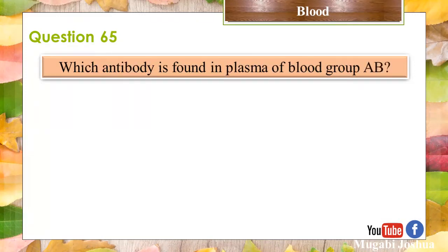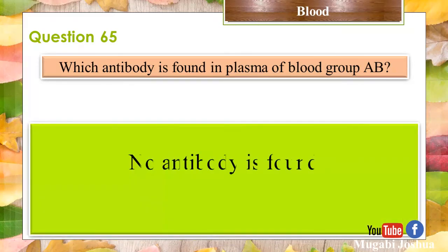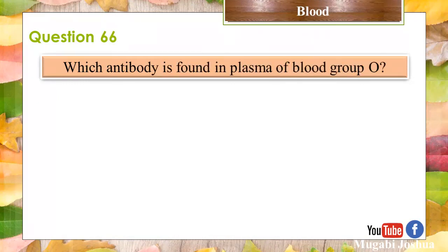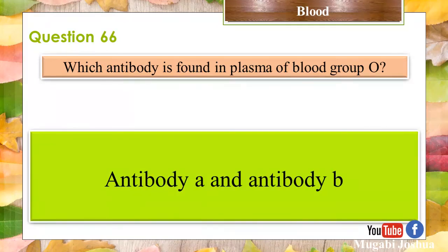Question 64: Which antibody is found in plasma of blood group B? Antibody A. Question 65: Which antibody is found in plasma of blood group AB? No antibodies found. Question 66: Which antibody is found in plasma of blood group O? Antibody A and Antibody B.